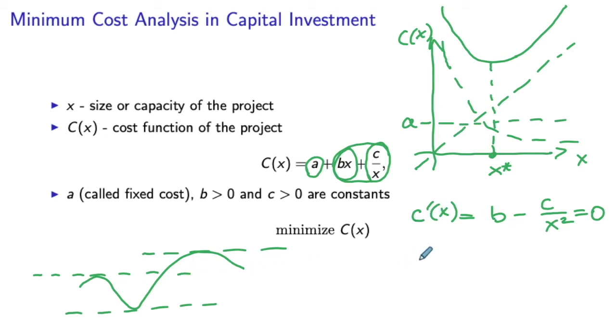We can easily solve this equation. From here, we have x is equal to plus minus square root of c over b. And then because we know that the size of the project must be non-negative, your x star, the only candidate point for the minimizer, is going to be the square root of c over b.